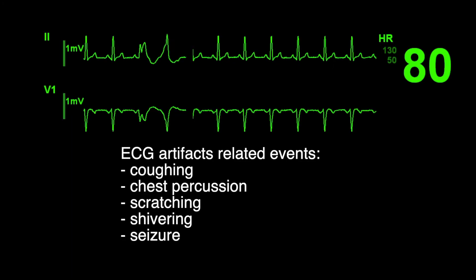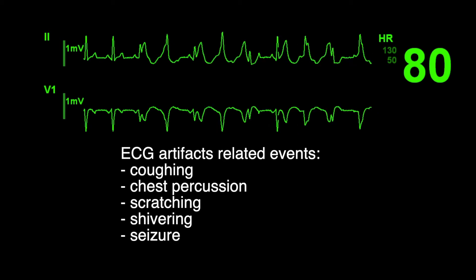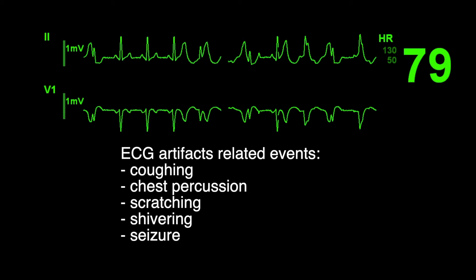ECG artifacts can be related to sensor connections or muscle electrical activities like coughing, chest percussion, scratching, shivering, and seizures.